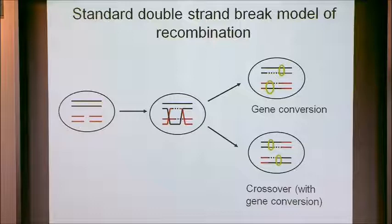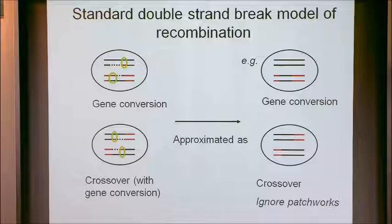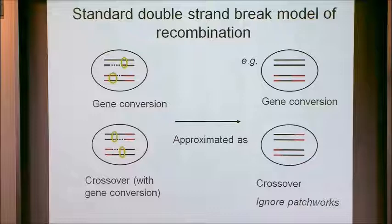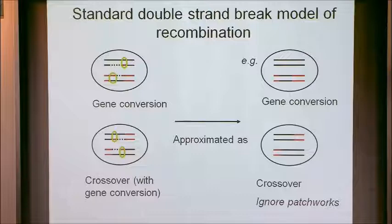Or it could involve something termed a gene conversion, which is a non-reciprocal transfer of a small amount of DNA from one homologous chromosome to another. The standard way of modeling this involves ignoring certain patchworks and assuming crossovers are simple crossovers without associated gene conversion, and a separate gene conversion event. I'm not going to talk about gene conversion at all — I'm going to assume we're dealing with recombination just as these crossovers.